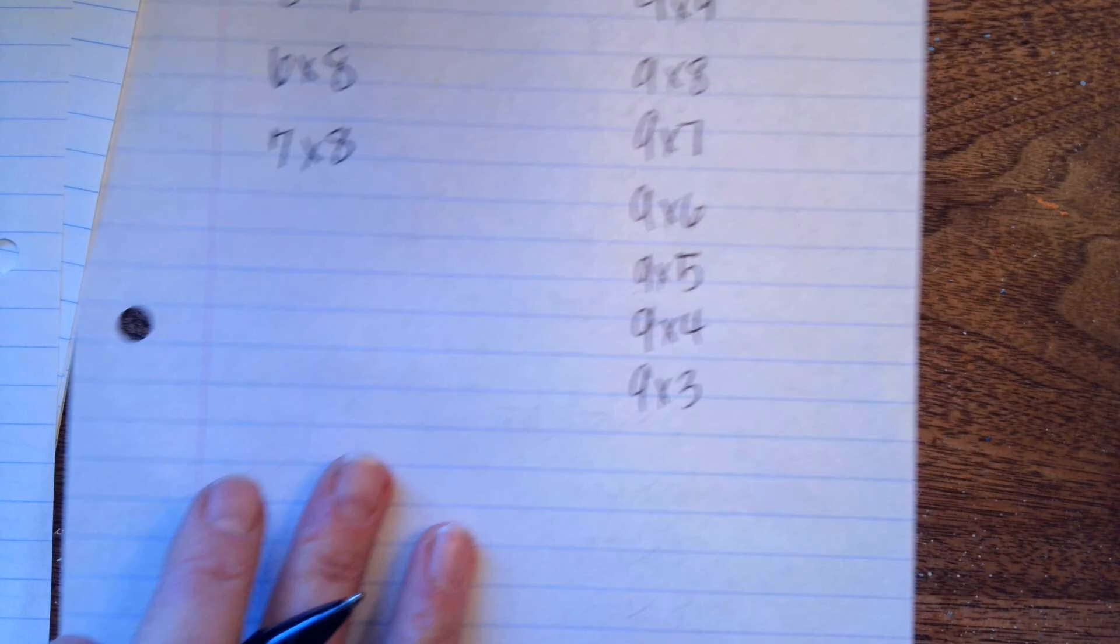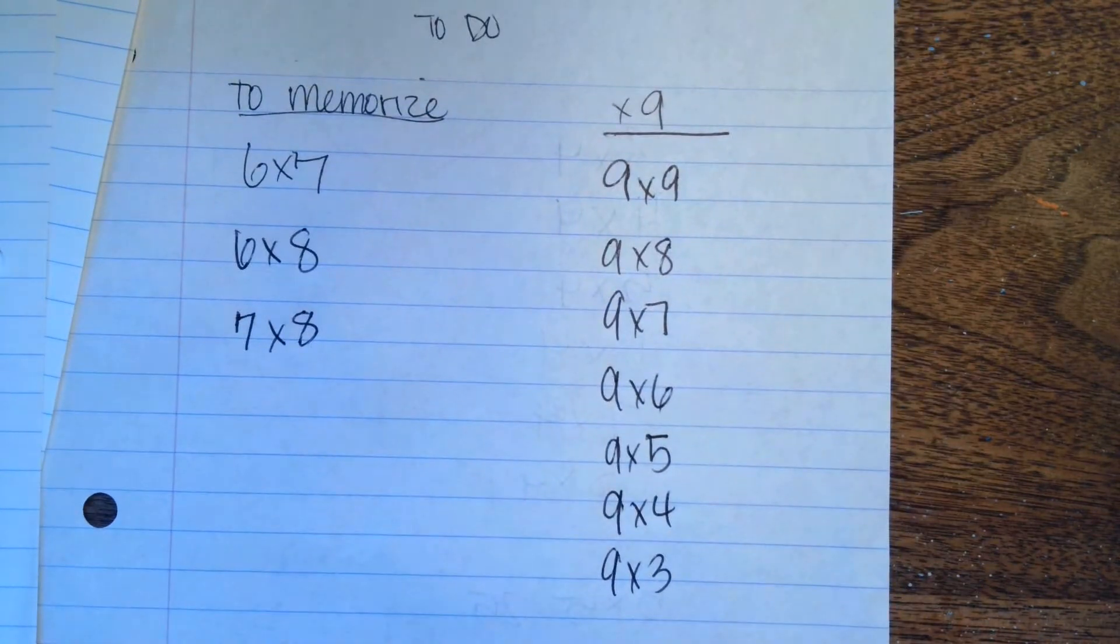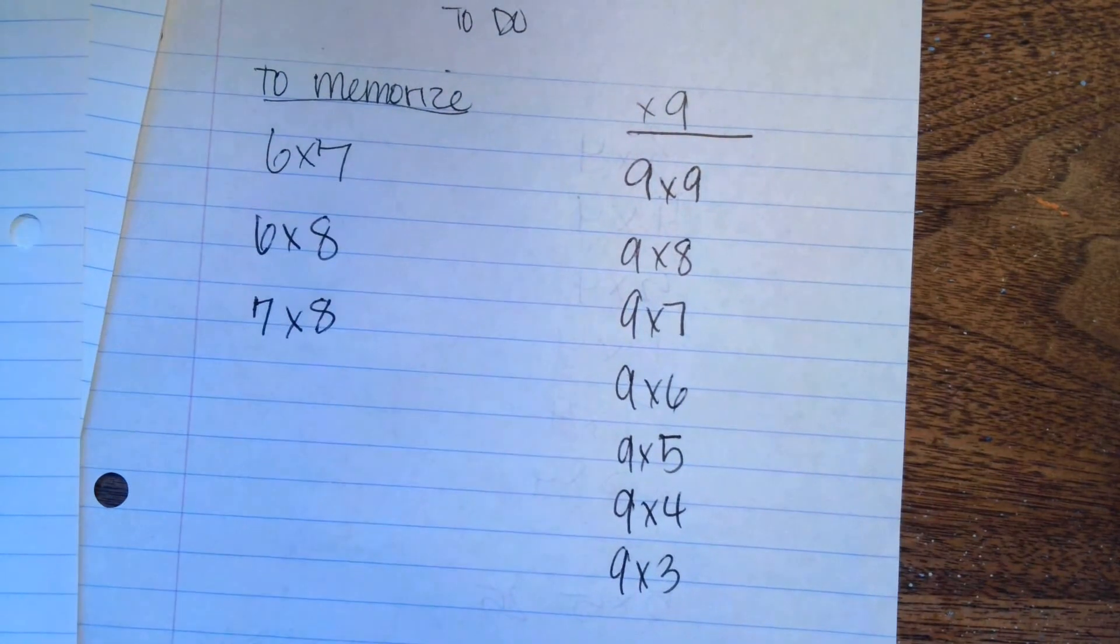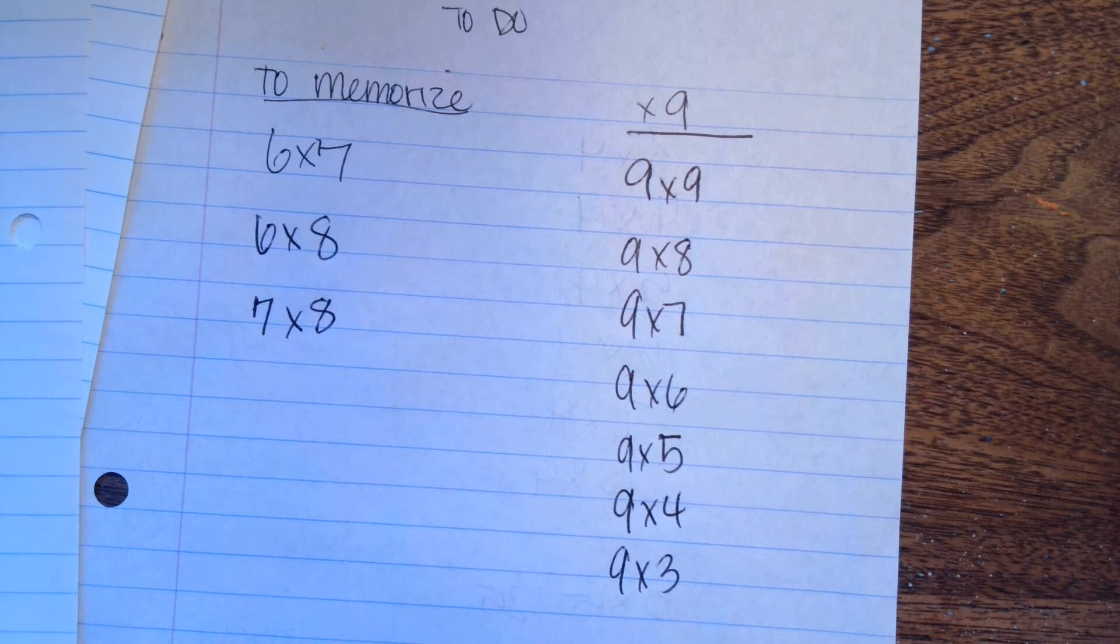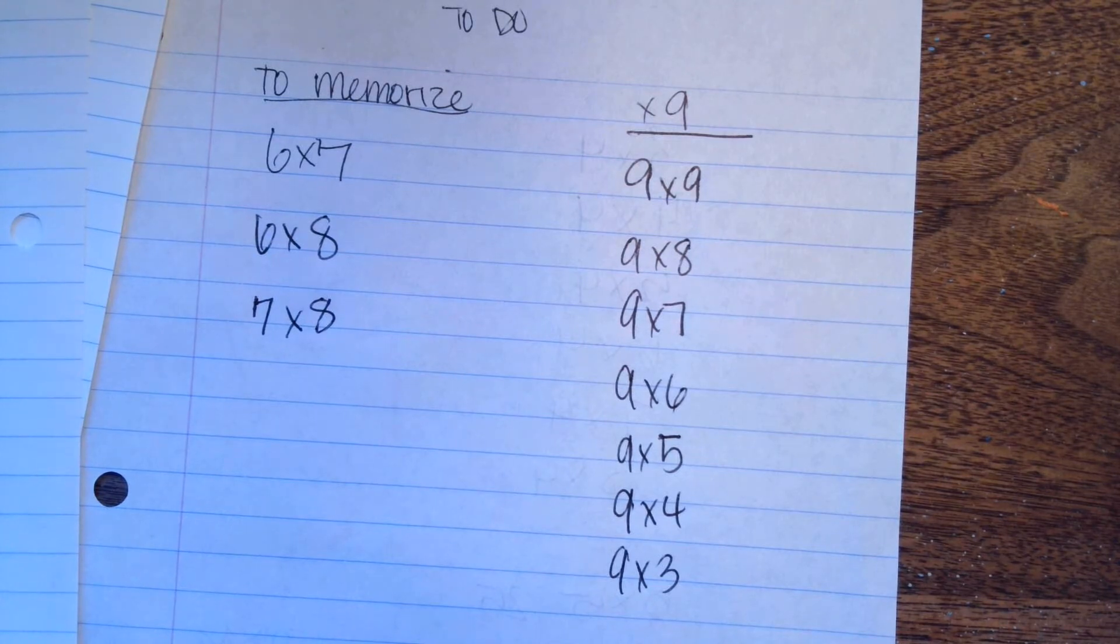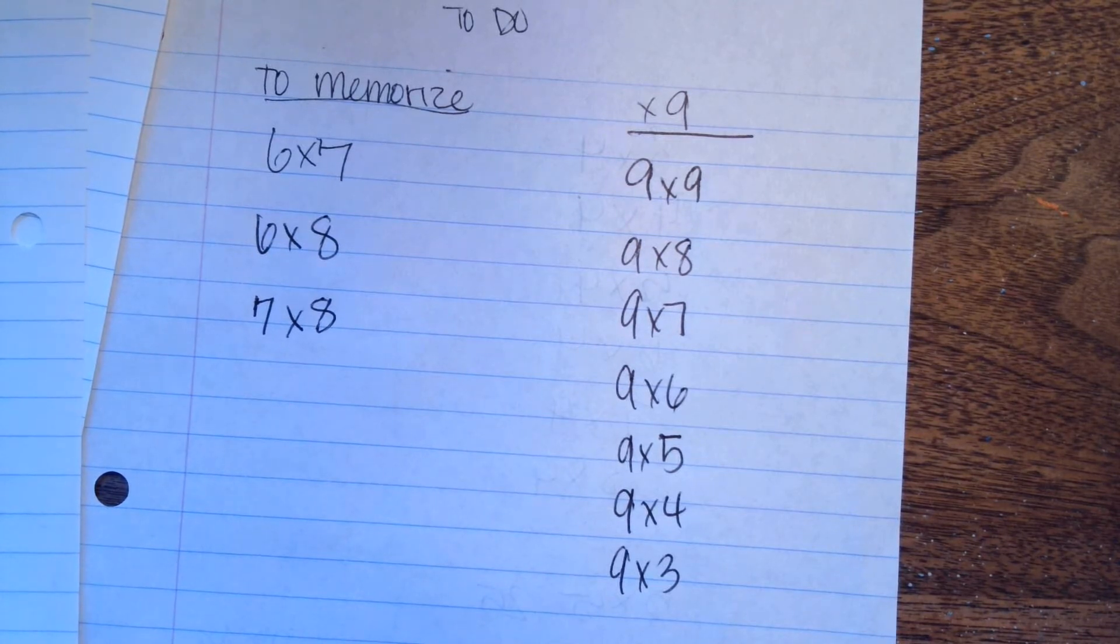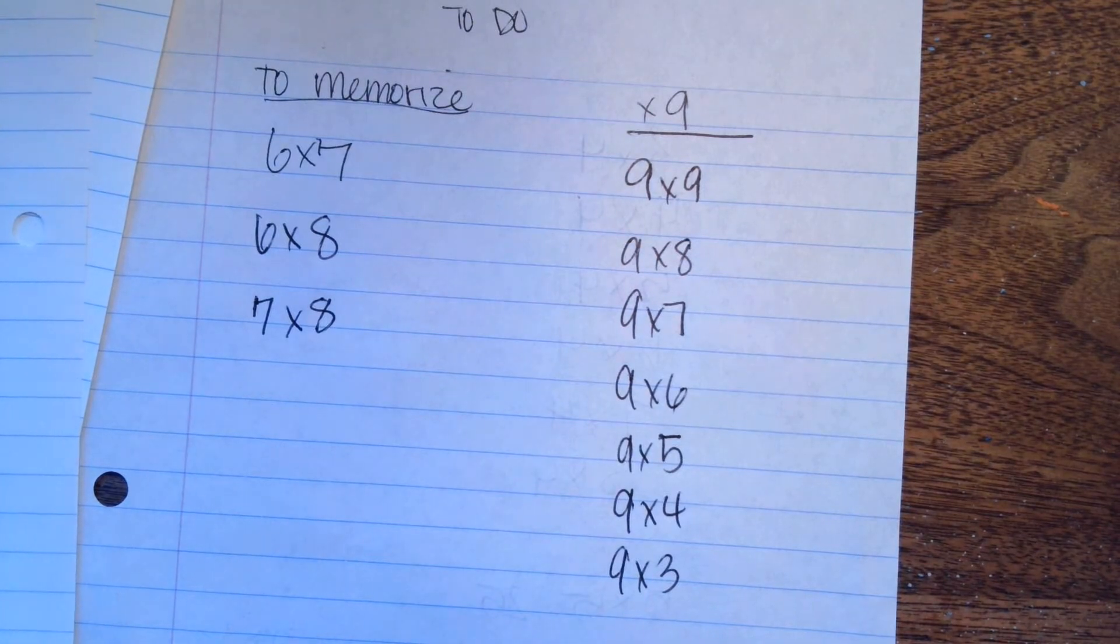All right, the last ones we have left to do, like I said, you're going to watch this for a couple weeks, so you don't have to get this right away. The times 9 strategy is probably the best one ever. It's a little complicated, and it's going to take a little bit of time, but in about 3 weeks from now, you're going to love times 9.